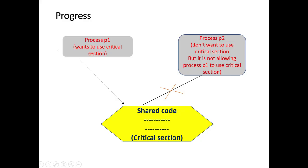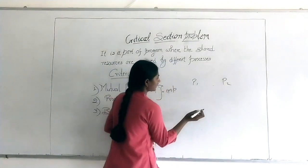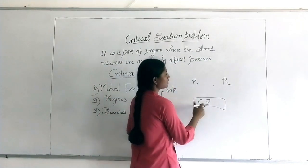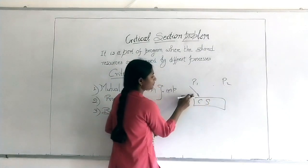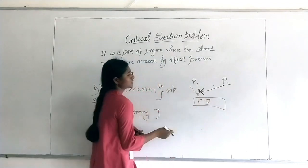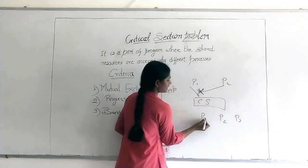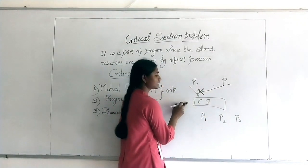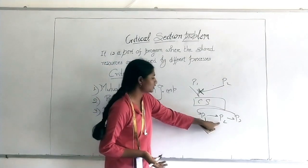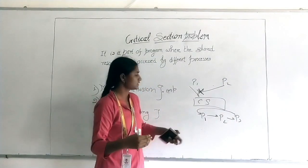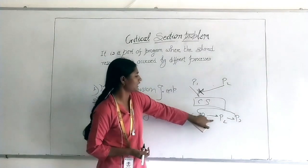The second criterion is progress. If you have two processes P1 and P2, and P1 wants to use the critical section but P2 does not want to use it — P2 is not executing but is not allowing P1 to get into the critical section either. For example, in round robin, P1 comes and uses the critical section, then P2 gets a chance, then P3, and back to P1. But if P2 doesn't want to use the critical section, it restricts P1 as well. This is the progress problem.